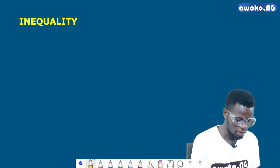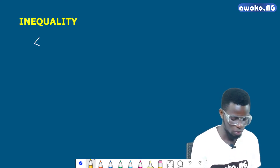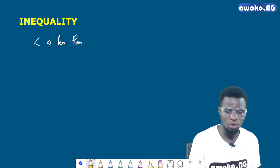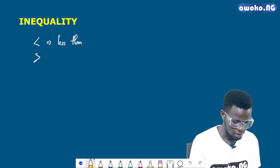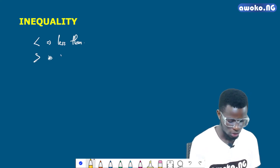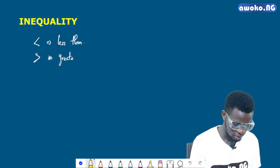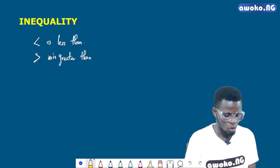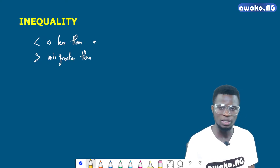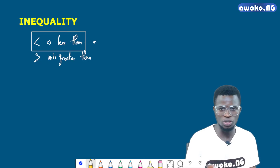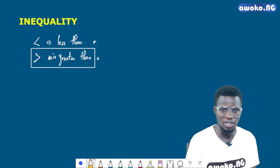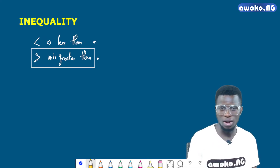It is either replaced by this symbol over here, and this symbol represents less than. It can also be replaced by the symbol which shows greater than. So we are comparing two expressions — what is on the left hand side for this case is less than what is on the right hand side, while for this case over here, what is on the left hand side is greater than what is on the right hand side.